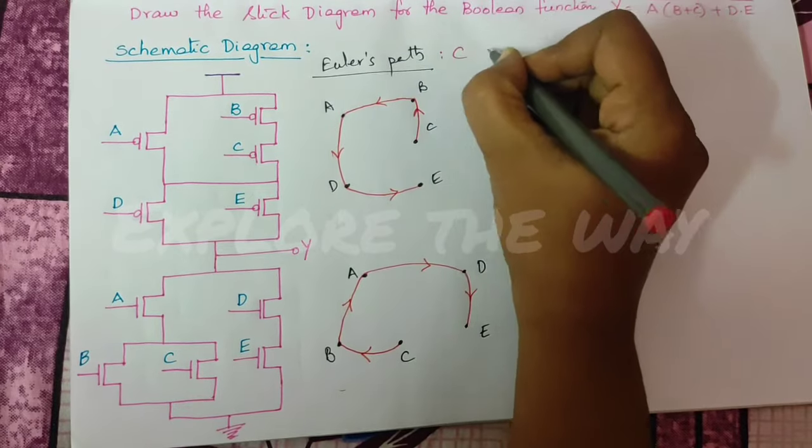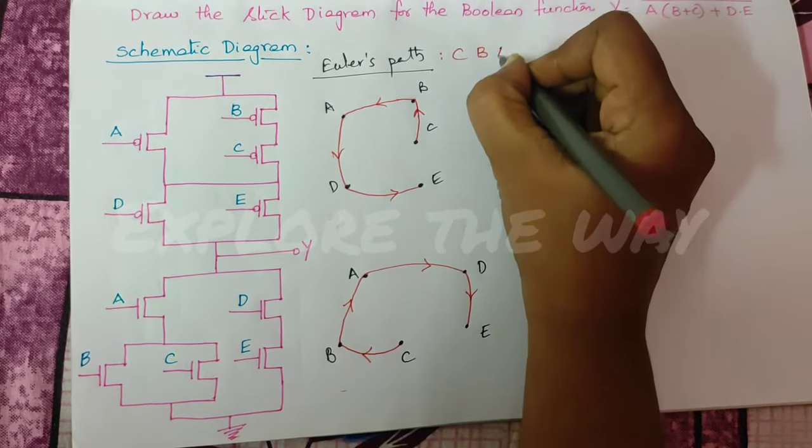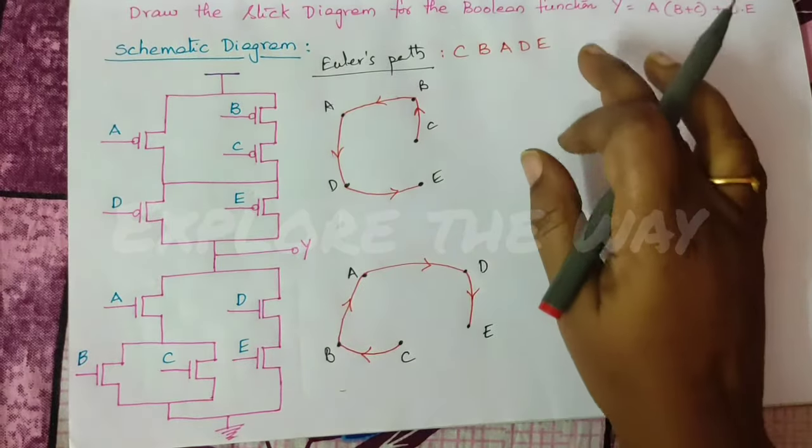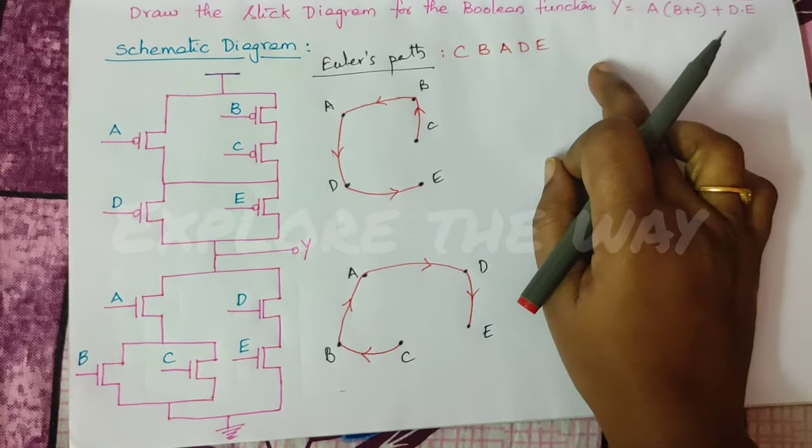What is that? C, B, A, D, E. You have to place the transistors in this order.